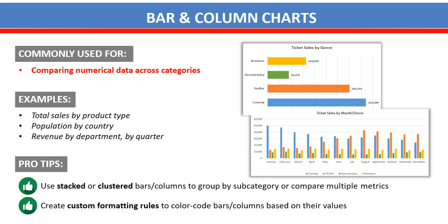You can see those images — the first one is a bar chart and the second one is a column chart. These charts are mainly used for comparing numerical data across categories. For example, we'll use data like total sales by product type, population by different countries, and revenue by department by quarter. By using these charts, we'll represent data bi-monthly, yearly, quarterly, or across different regions, zones, and other categories.